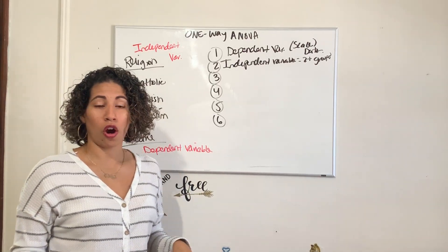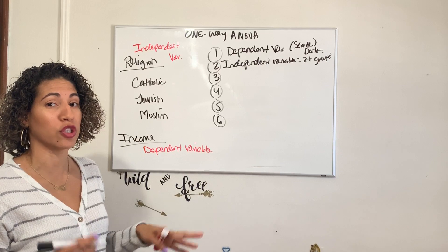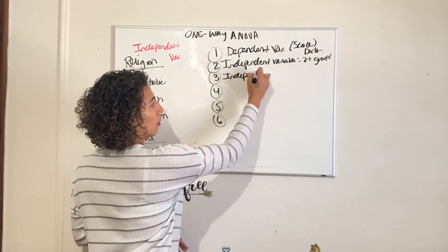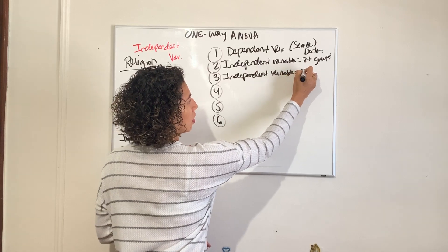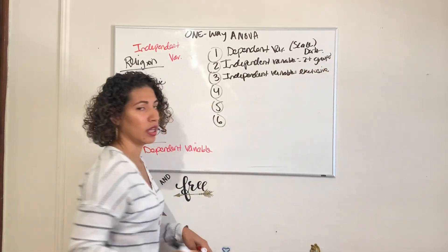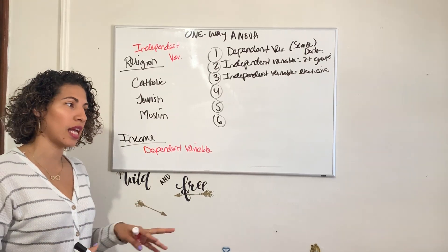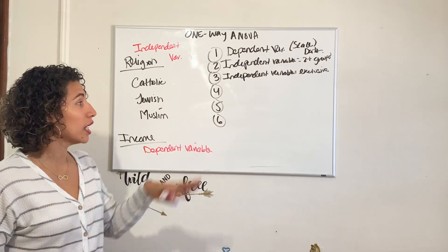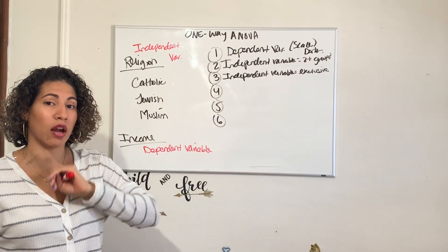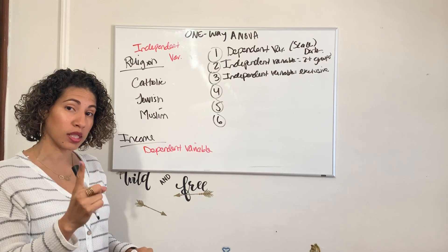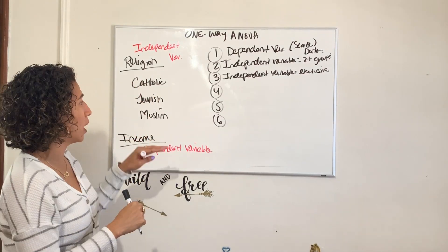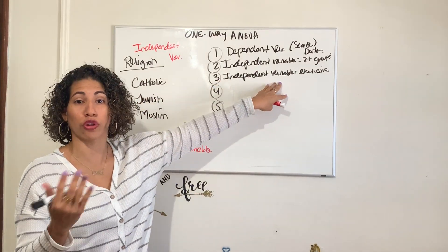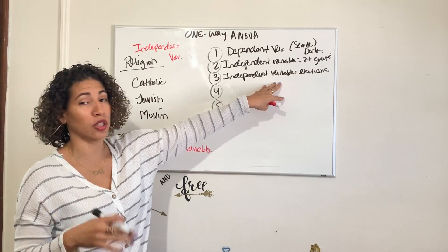Our third assumption means that each of the independent variables should be exclusive - there should be exclusive observations. In other words, if you ask a person what is your religion, I can't say I'm half this and half that, half Catholic, half Jewish. No, the person has to identify one or the other. Each observation has to be independent of each other. Every person measured can only be measured once in each of the groups. You can't have a person that's Catholic and also Jewish because that person was then measured twice. If not, you'd be violating the third assumption or requirement of the one-way ANOVA.